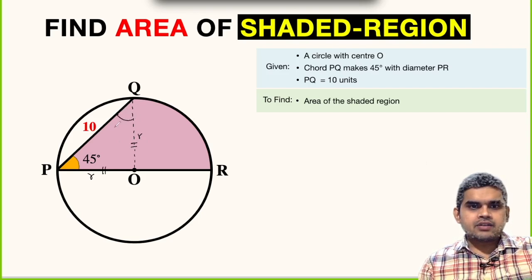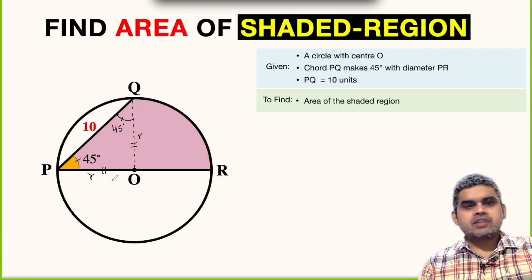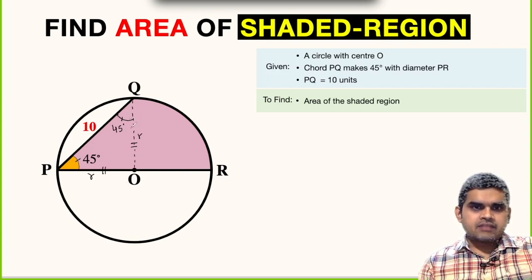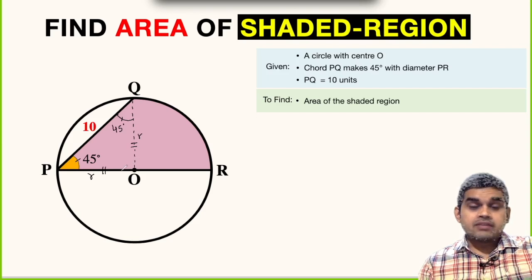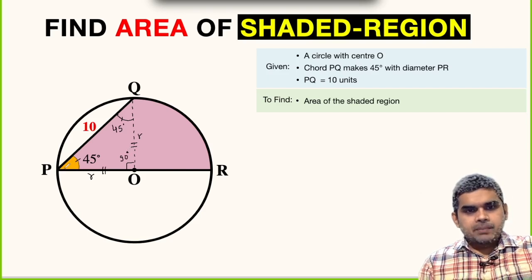This triangle is isosceles in nature and hence this angle is also 45 degrees. By angle sum property, angle 45 plus angle 45 plus the angle at point O will be 180 degrees. If you sum them it will be 90, so this angle is 90 degrees.